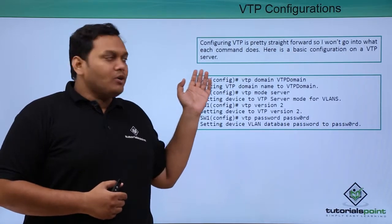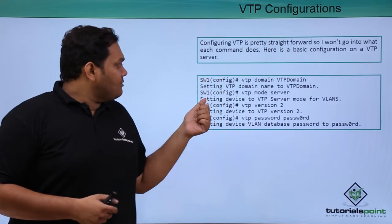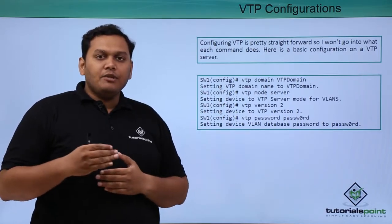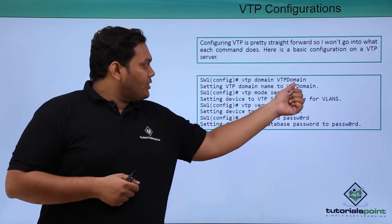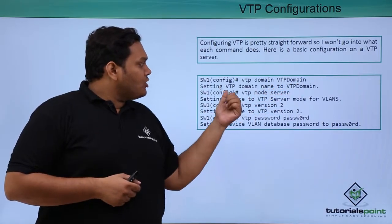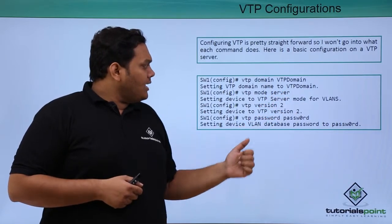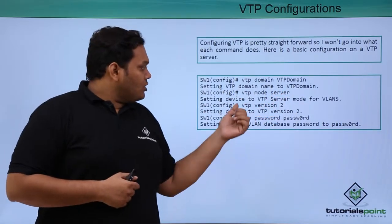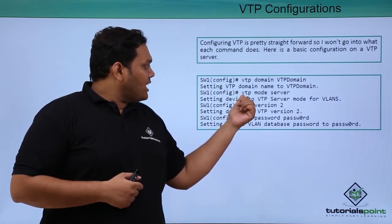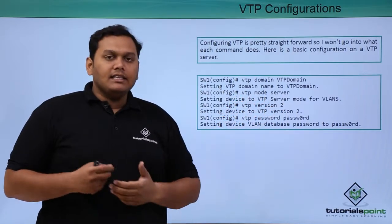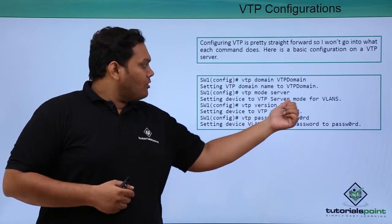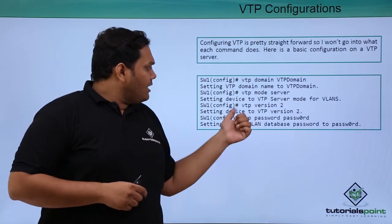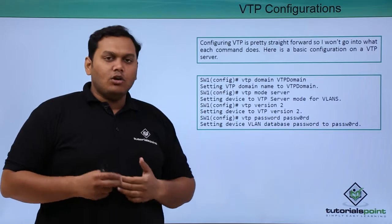Here is a basic VTP configuration. For Switch 1 in configuration terminal mode, you enter the VTP domain name as 'VTP domain'. The domain name is changed to VTP domain, and we also change the VTP mode to server mode by entering 'VTP mode server' in configuration terminal mode. The VTP server mode for VLAN is enabled, and VTP version 2 is also enabled here.